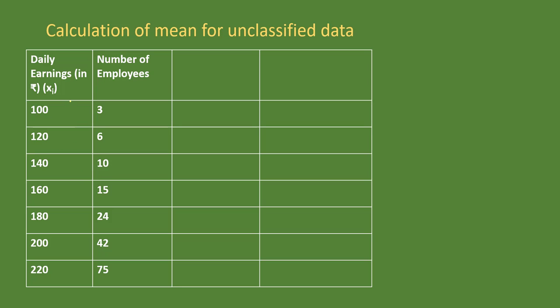I am going to bring in a step deviation method given that these are all large numbers. We are going to look at what is the assumed mean. If I look into this data, this is an odd number data. I am taking 160 as the assumed mean.